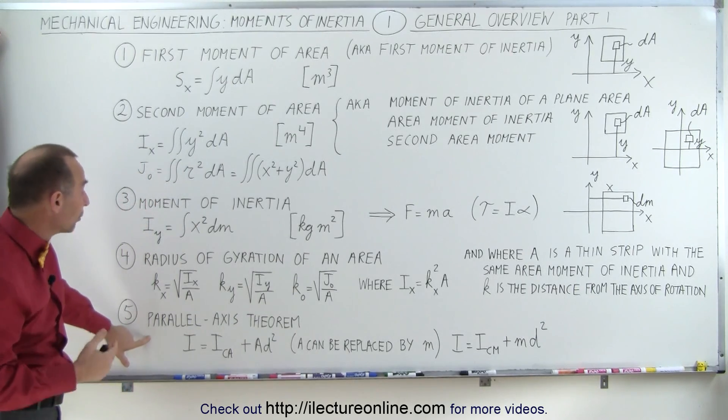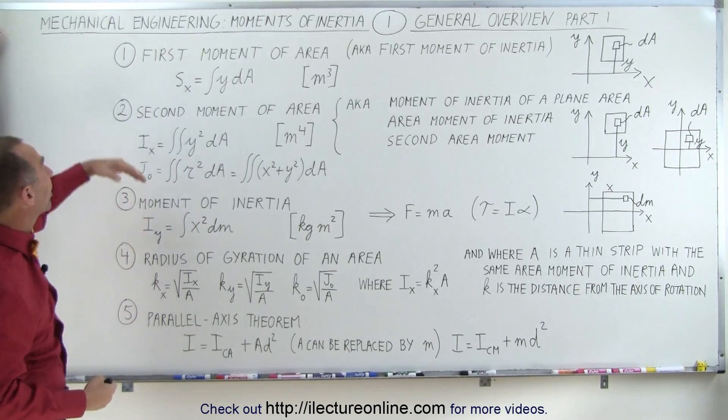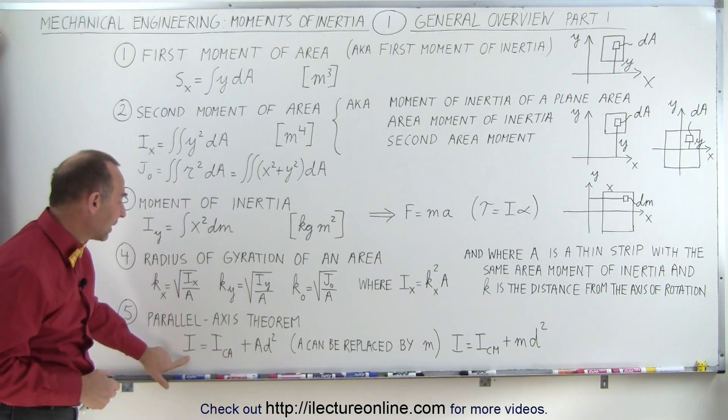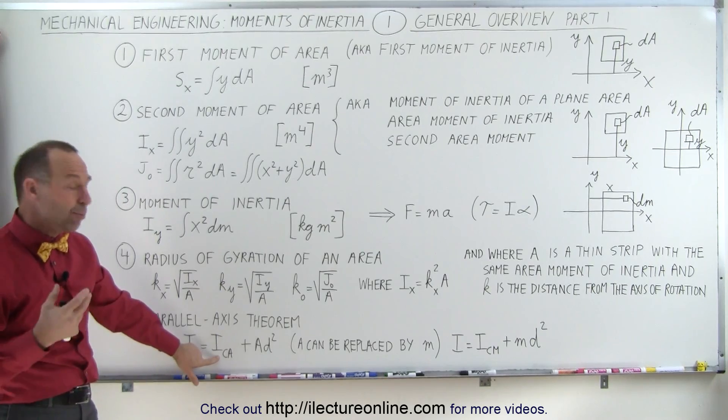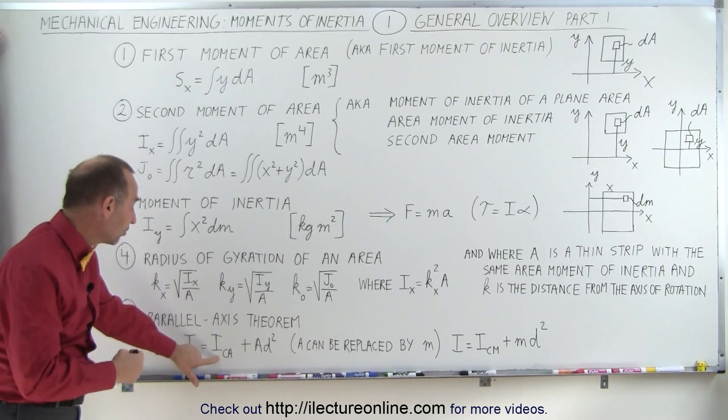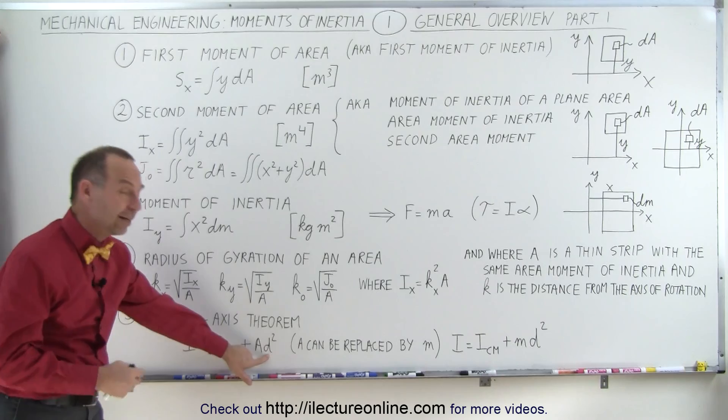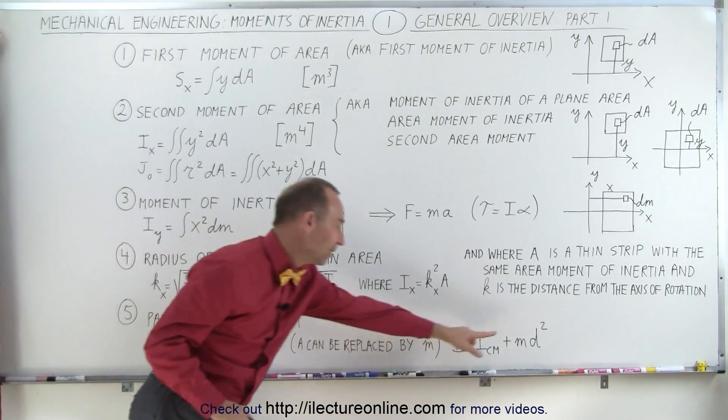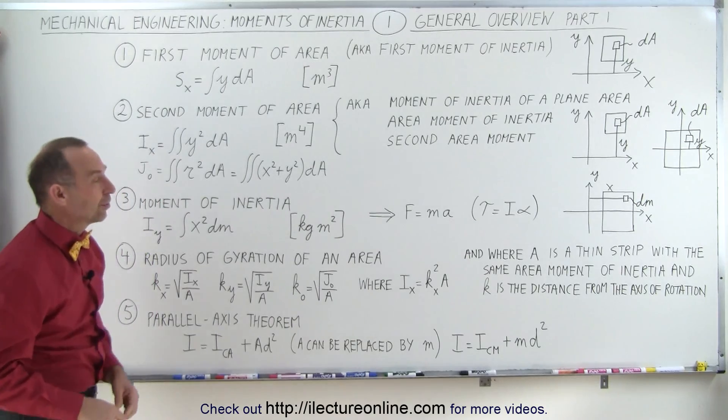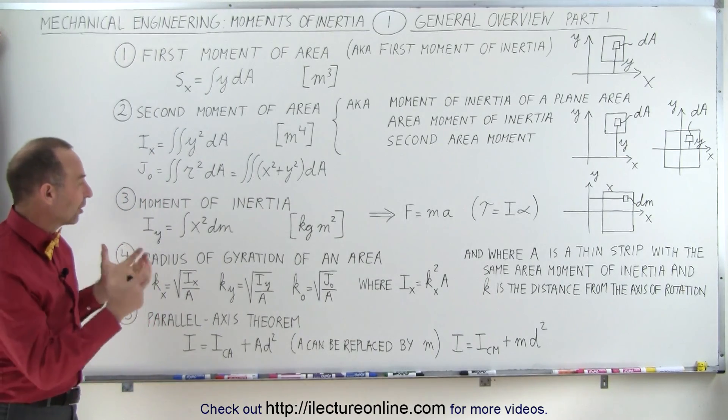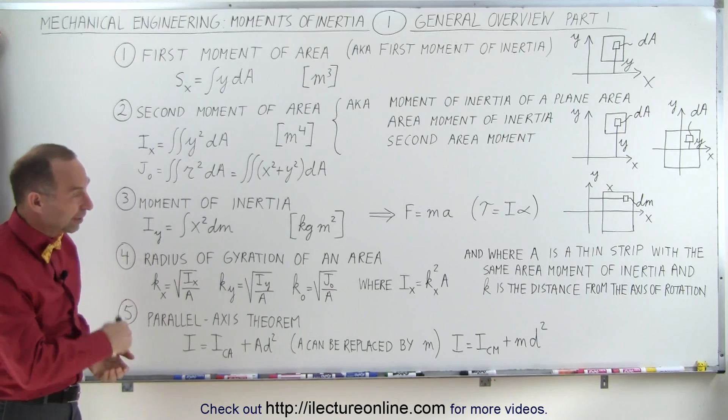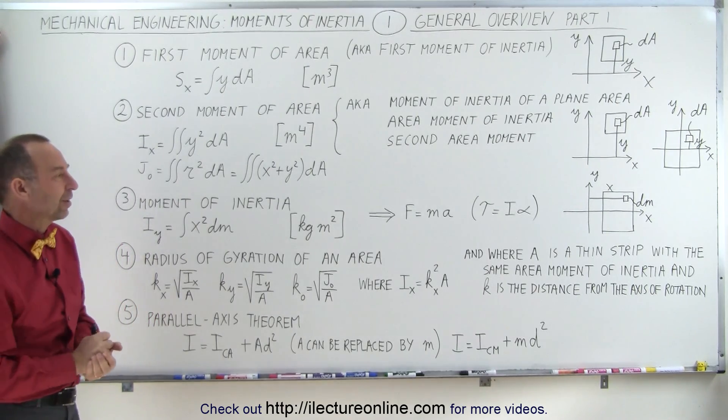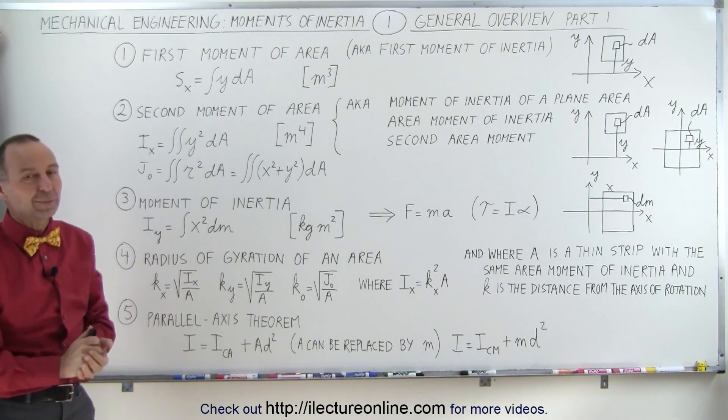We can also do the same thing with an area moment of inertia, or what we should say, with the first moment of area or the second moment of area. We can calculate that by taking the moment of inertia from the centroid axis and moving a distance d. Of course, in that case, we take d squared times the area instead of d squared times the mass. So you can see there's a lot of different subtopics to this general topic of moments of inertia, and on the next video—the next several videos—we'll show the other subtopics that we're going to discuss in this particular chapter.